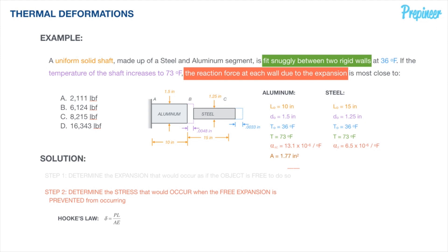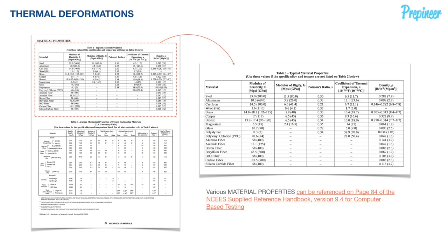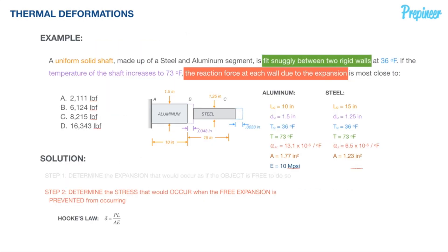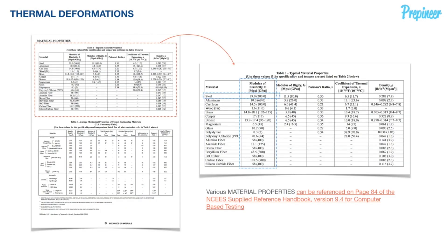Pulling Hooke's Law back to our problem statement, we need the cross-sectional areas. The cross-sectional area of the aluminum section is 1.77 inches squared; for the steel section it's 1.23 inches squared. For the modulus of elasticity, using the same property tables on page 84 of the NCEES reference handbook, aluminum's elastic modulus (Young's modulus) is 10 Mpsi. For steel it is 29 Mpsi.